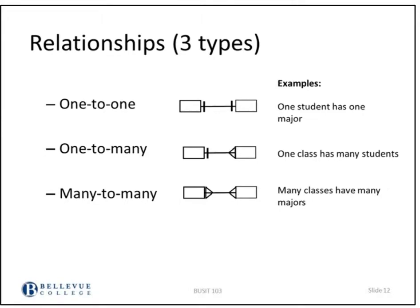Your relational model can be one-to-one — for example, one student has one major. Or it could be one-to-many — one class has many students, or one student can have many classes. Or it can be many-to-many — many classes have many majors, or many teachers and many classes can have many students. These are the ways you represent relationships in a logical diagram of your database.